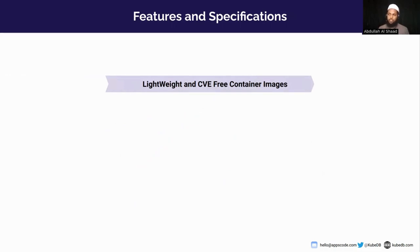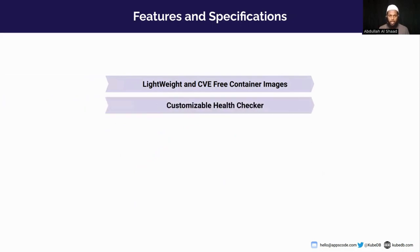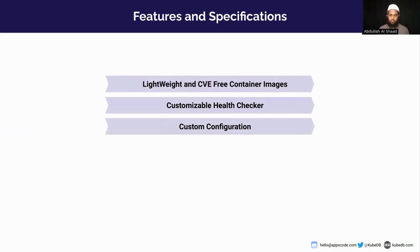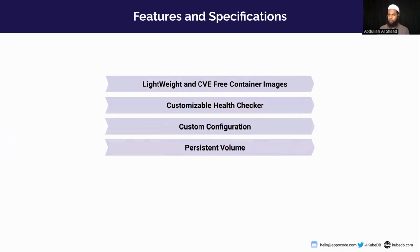KubeDB offers several features: we use lightweight and CVE-free container images for both the main ZooKeeper container and the init containers. We have a customizable health checker that checks the health of ZooKeeper. You can provide custom configuration when bootstrapping the ZooKeeper instance, and we use persistent volumes so that data is stored permanently — if accidental deletion occurs, you don't lose your data.